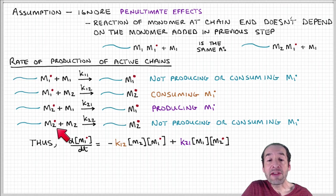Similarly, if we have an active site with monomer two at the end and add monomer two, we get a chain with monomer two. There's no net change with respect to active sites that contain monomer one at the end.